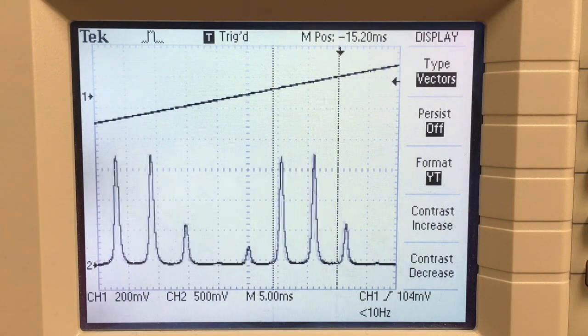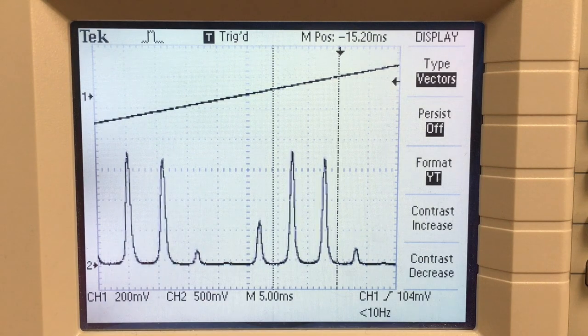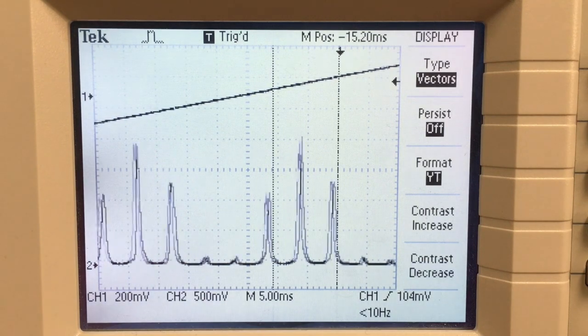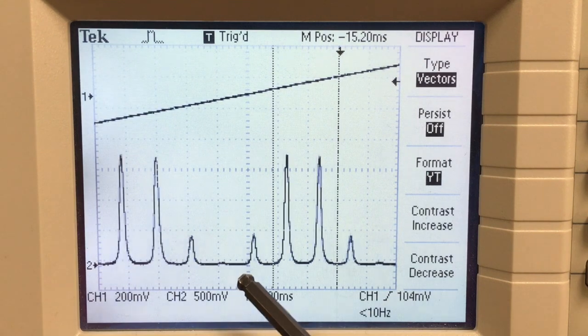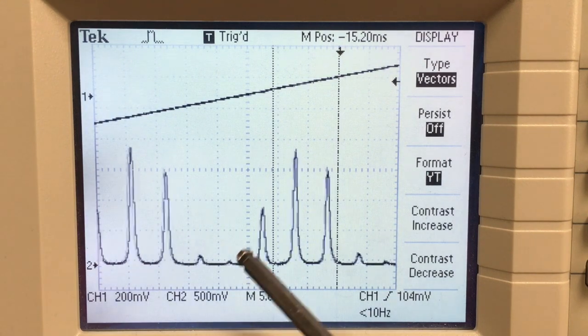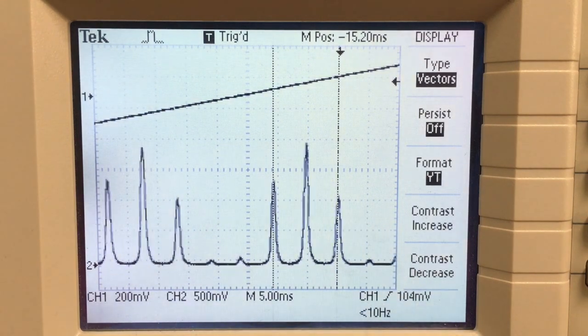All that means is as the laser tube changes temperature, its internal mirror spacing is increasing, changing the resonant frequencies that the laser puts out. And so we can see that showing up on our Fabry-Perot scan.